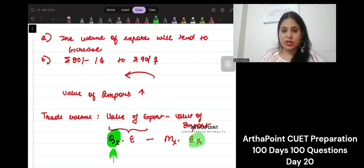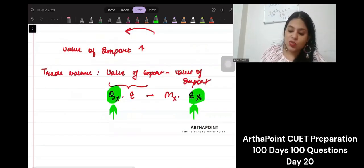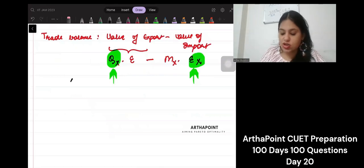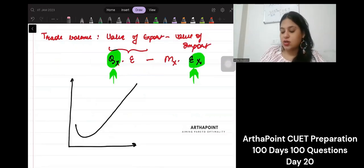But here the exchange rate is also increasing. So in such cases what we go ahead and use is called a J-curve, which is based on the Marshall-Lerner condition.